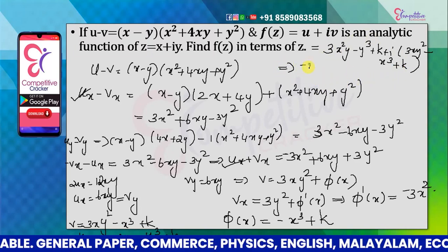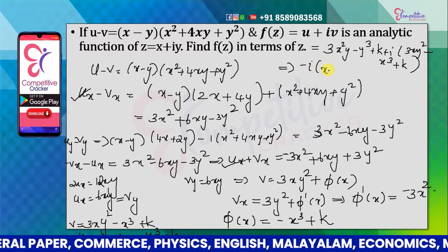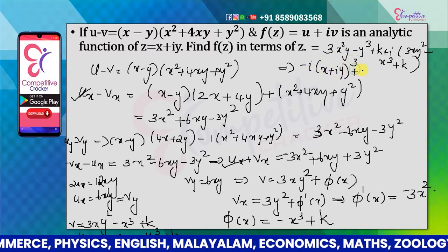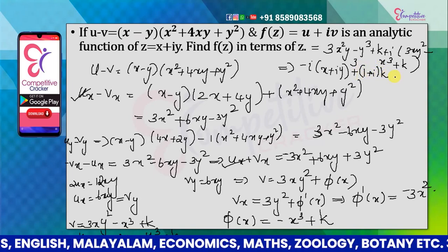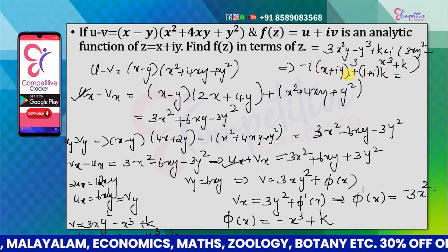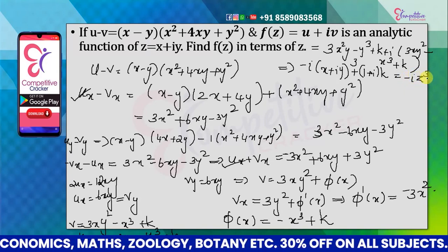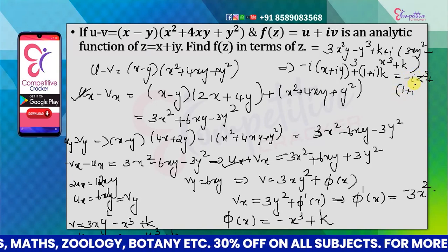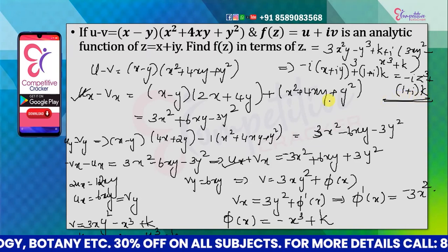So we use minus i times (x plus iy) cubed plus (1 plus i) times k. Since x plus iy equals z, we get f(z) equals minus iz cubed plus (1 plus i)k.